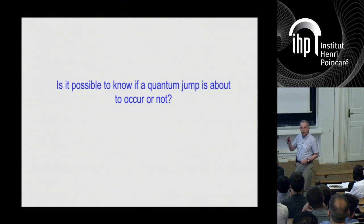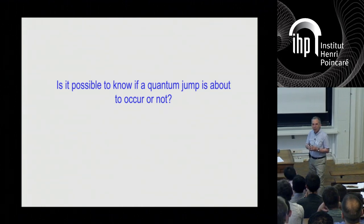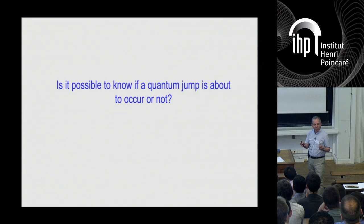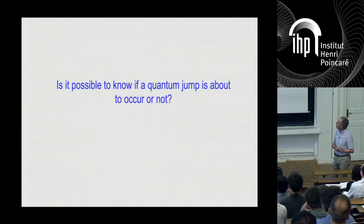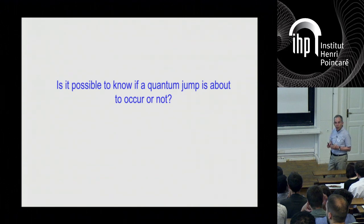So the quantum jumps are reputed to be essentially completely random. They are unpredictable in the long term. But the question is that, is there some kind of advanced warning signal that will tell us whether a quantum jump is about to occur or not?